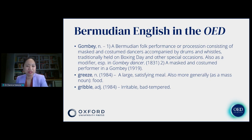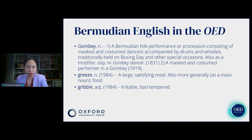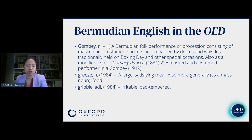Gombe is a very uniquely Bermudian word — a Bermudian folk performance or procession consisting of masked and costumed dancers accompanied by drums and whistles, traditionally held on Boxing Day and other special occasions. It's also used as a modifier, and refers to a masked and costumed performer in this folk performance, with that usage dating back to 1919. Grease, dating to 1984, is a large, satisfying meal, also used more generally as a mass noun to refer to food. And gribble as an adjective, also dating to 1984, means irritable or bad-tempered.